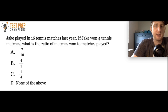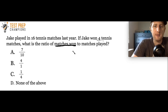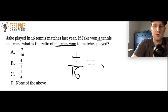Next question: Jake played in 16 tennis matches last year. If Jake won 4 tennis matches, what is the ratio of matches won to matches played? As always, getting the proper order is the most important part. Matches won goes on top, which is 4, and matches played goes on the bottom, which is 16. Dividing top and bottom by 4 gives 1 over 4, which is the correct answer.